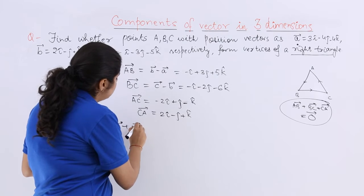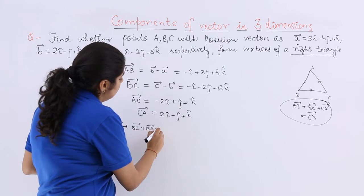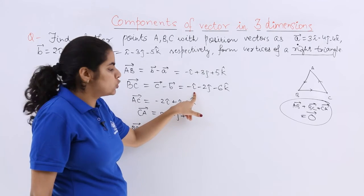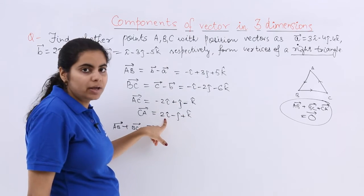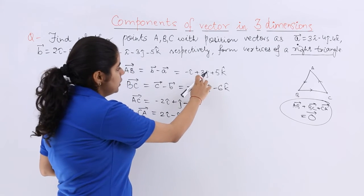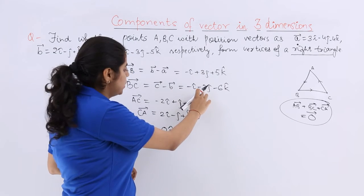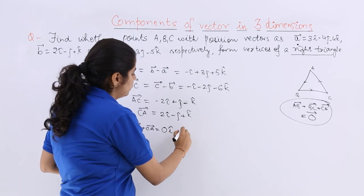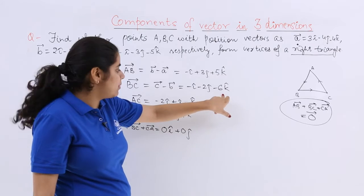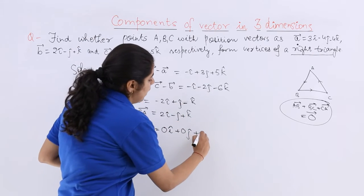So AB vector plus BC vector plus CA vector: minus i minus i minus 2i plus 2i is 0i cap, plus 3j minus 2j plus j is 0j cap, plus 5k minus 6k plus k is 0k cap.